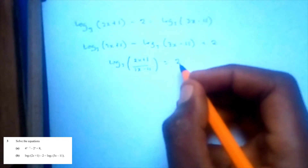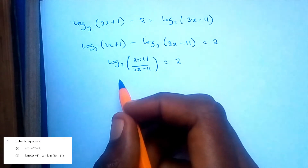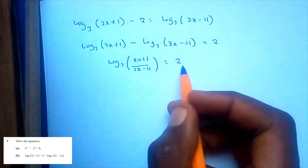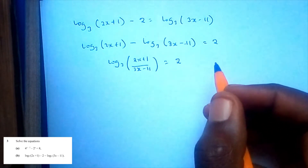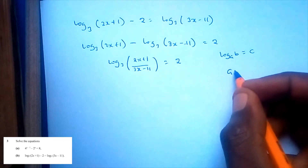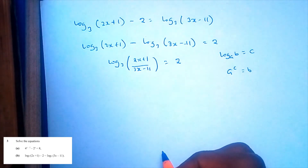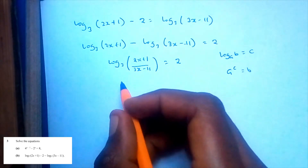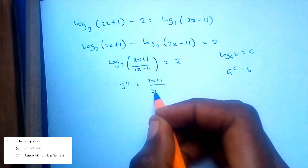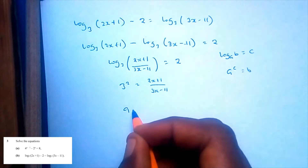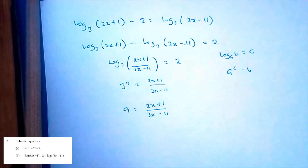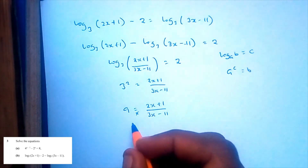There's another rule in logarithms: log_a of b equals c is the same as a to the power c equals b. So in this case that would be 3 to the power 2 is equal to (2x plus 1) over (3x minus 11), which gives us 9 equals (2x plus 1) over (3x minus 11).